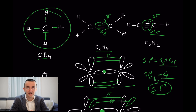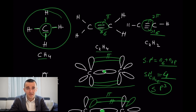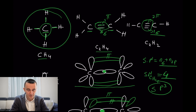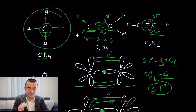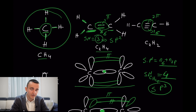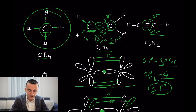A steric number of four means that carbon uses one s orbital and three p orbitals to form four equivalent, energetically identical bonds — this gives sp3 hybridization. In the second case, be careful: hybridization does not deal with pi bonds. Pi bonds do not undergo hybridization; only sigma bonds and lone pairs count. For the double-bond carbon, there are three sigma bonds and no lone pairs, giving a steric number of three, so this carbon is sp2 hybridized.